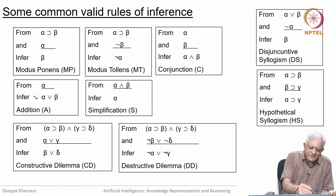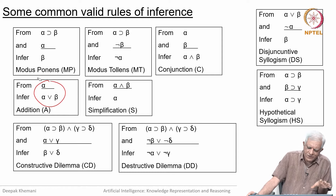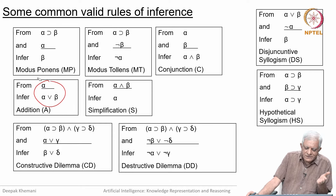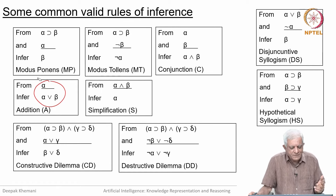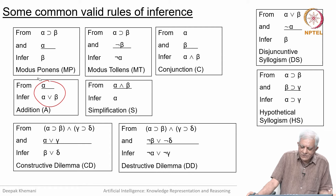Something called addition says that if alpha is true, then alpha-or-beta is true. Remember the logical definition of alpha-or-beta: the definition of 'or' is that at least one of them must be true. So if alpha is true, then definitely alpha-or-beta will be true. It is kind of trivial in that sense, but it is a useful rule in many places. The opposite is simplification: if alpha-and-beta is true, then you can conclude alpha essentially.